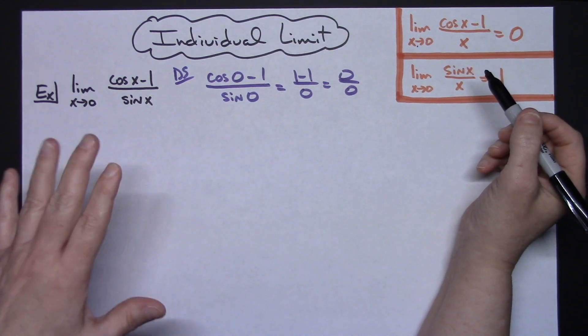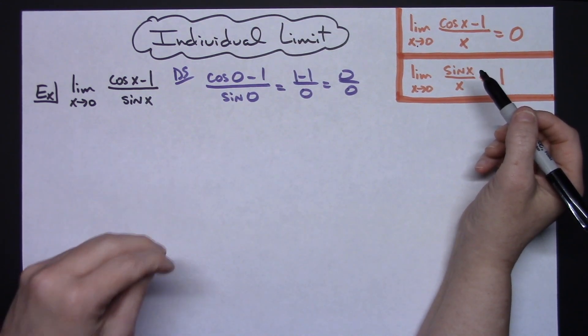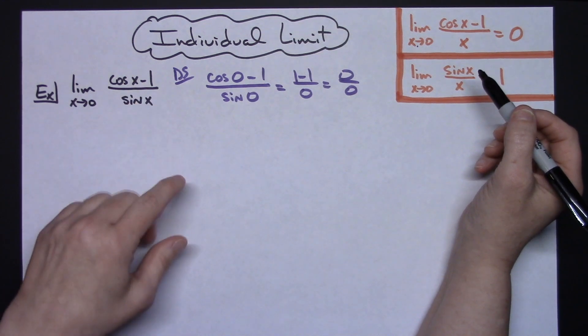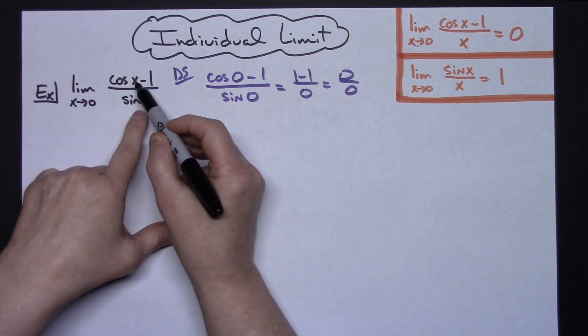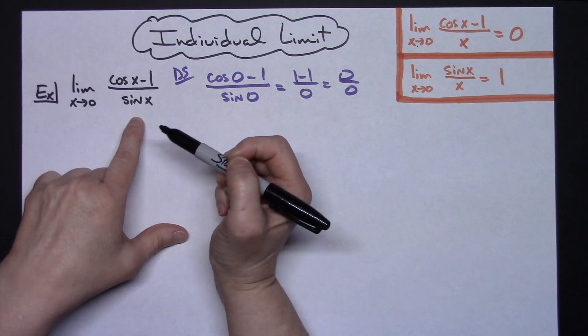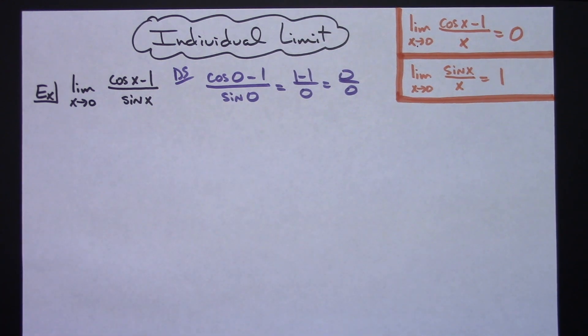So I can multiply through by a form of 1 and not change this expression. Since I want my X in the bottom of both the numerator and the denominator, I'm going to choose to multiply through by 1 over X.